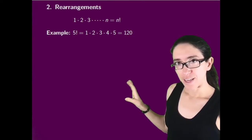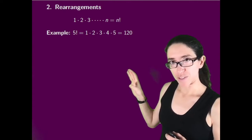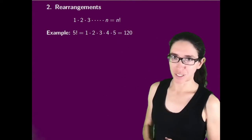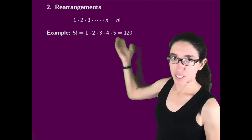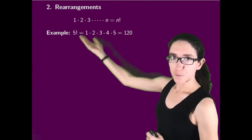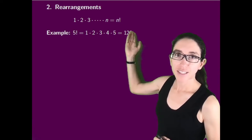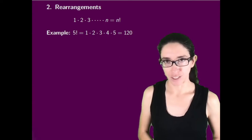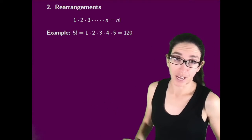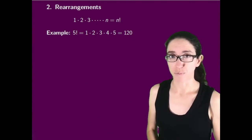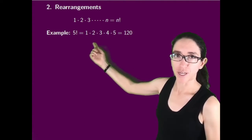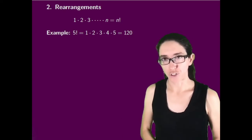The product of the numbers from one up to n also comes up in combinatorics a great deal, especially in the context of rearrangements. The product of the numbers from one up to n has its own symbol: it's called n factorial. There's not some closed formula like there was for the sum, so we just write an exclamation point to denote that. For instance, five factorial is the product of the numbers from one up to five, which is one hundred and twenty.